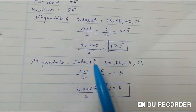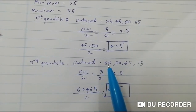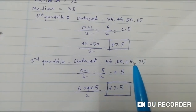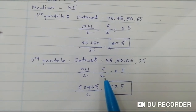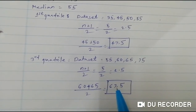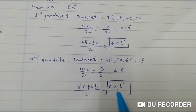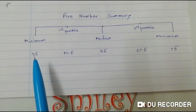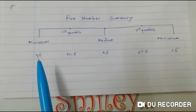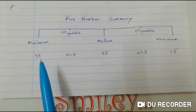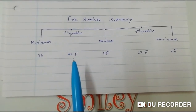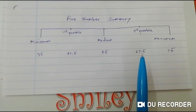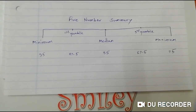Same process applies for the third quartile. Our median value is 55 and maximum value is 75. We consider all elements between them and calculate the median the same way as the first quartile — it comes out to 67.5. So the final five number summary is: minimum = 35, first quartile = 47.5, median = 55, third quartile = 67.5, and maximum = 75.